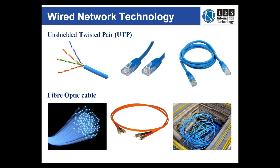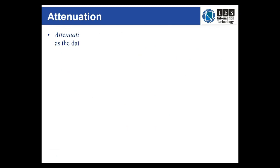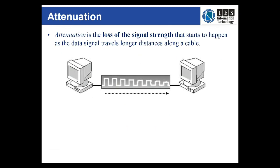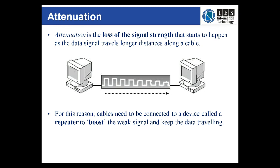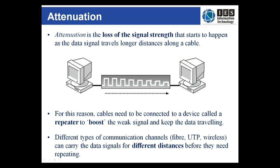The further data travels along a cable, the weaker its signal strength becomes — this is known as attenuation. Therefore, in networks where cable distances are long, repeaters are needed to read the signal and boost it again so that the data can keep travelling. Different communication media have different distances before they need repeating.